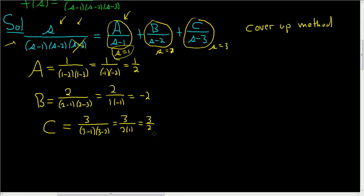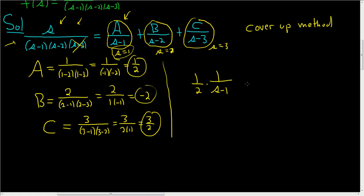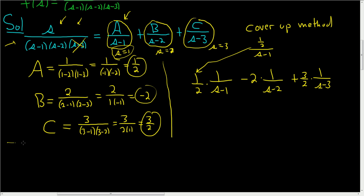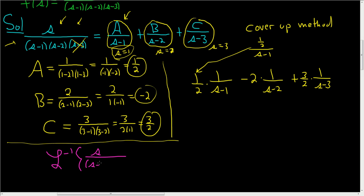Let's go ahead and rewrite what we have. So A is 1 half, B is negative 2, and C is 3 halves. So we have 1 half times 1 over S minus 1, minus 2 times 1 over S minus 2, and then 3 halves times 1 over S minus 3. The numbers are placed out front — it's much cleaner that way. To finish, we will take the inverse Laplace transform of S over S minus 1, S minus 2, S minus 3.